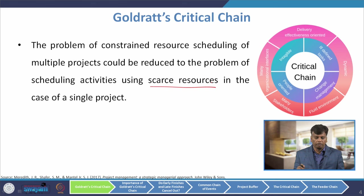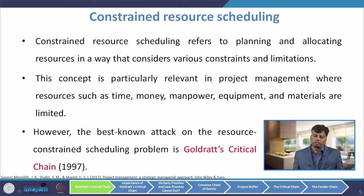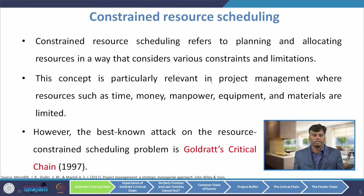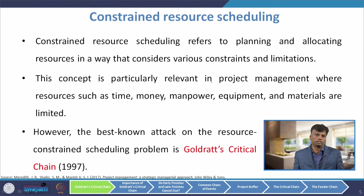What are constrained resources? Constrained resource scheduling refers to planning and allocating resources in a way that considers various constraints and limitations — there may be capacity limitations, manpower limitations. We cannot add more resources; there will be a limitation for each constraint. This concept is particularly relevant in project management, where resources such as time, money, manpower, equipment, and materials are limited. The best-known way to manage constrained resources is using Goldratt's critical chain.